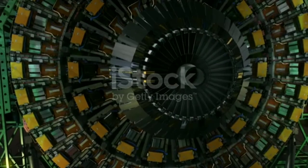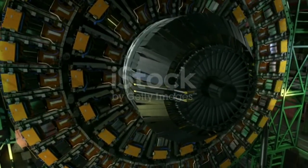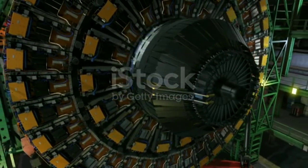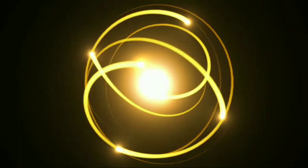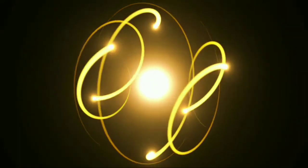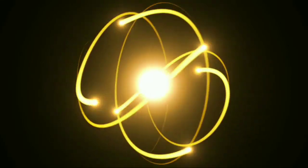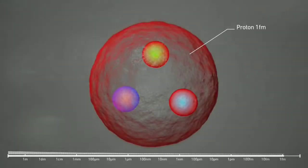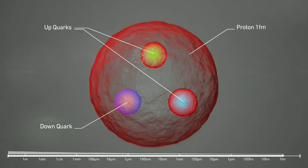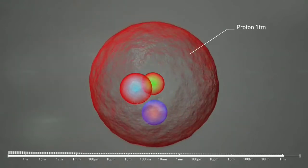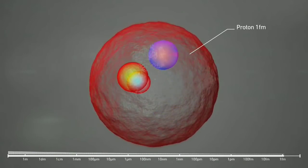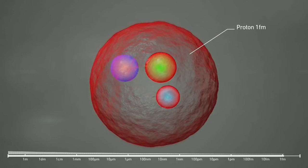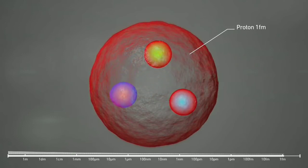In the 1950s, the development of improved particle accelerators and particle detectors allowed scientists to study the impacts of atoms moving at high energies. Neutrons and protons were found to be hadrons, or composites of smaller particles called quarks. The standard model of particle physics was developed that so far has successfully explained the properties of the nucleus in terms of these subatomic particles and the forces that govern their interactions.